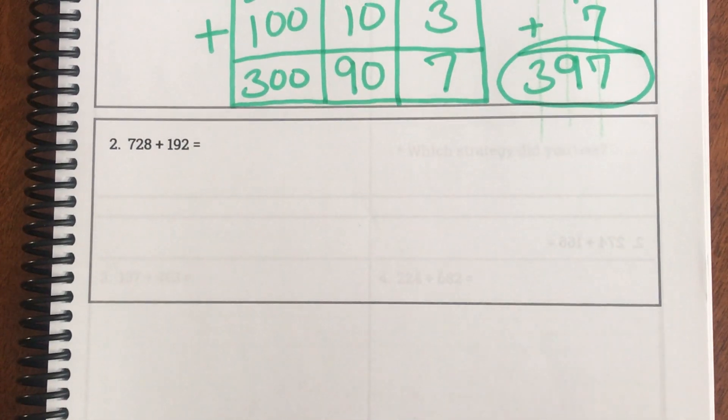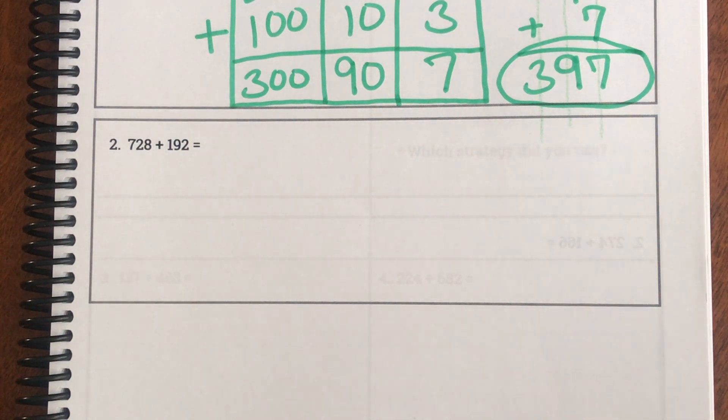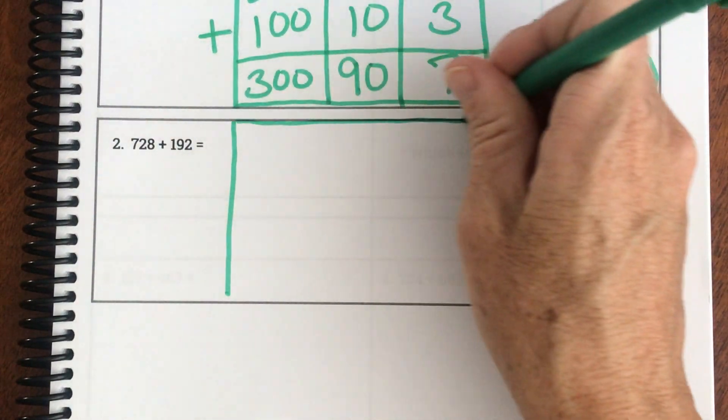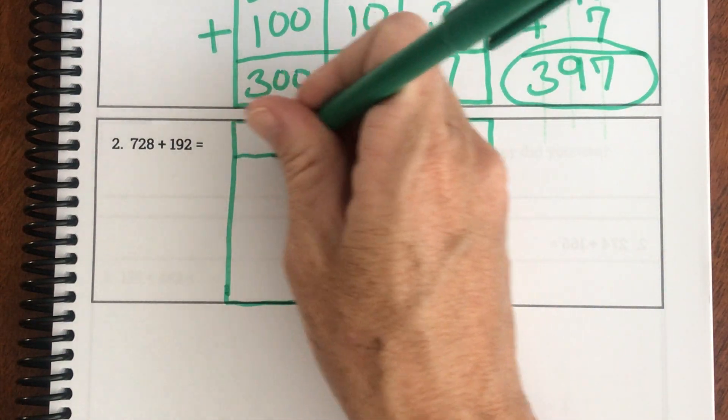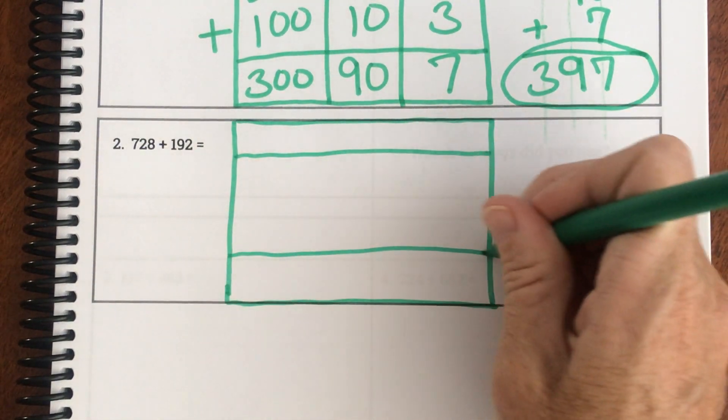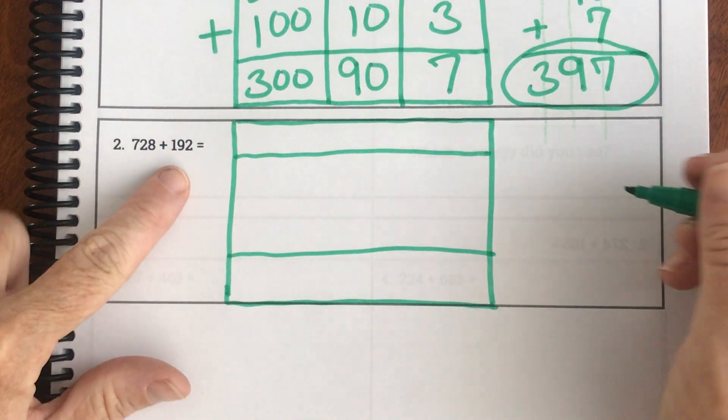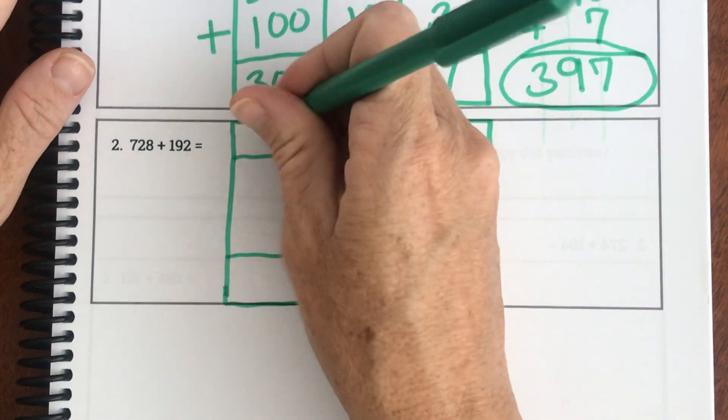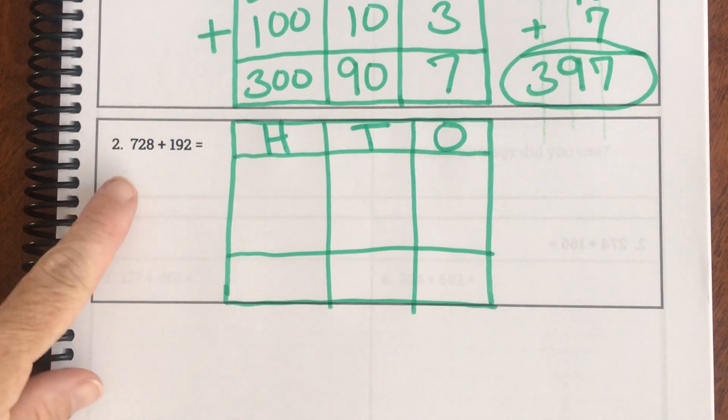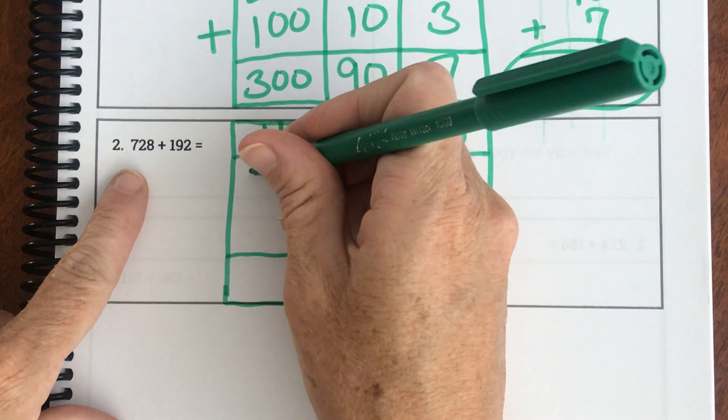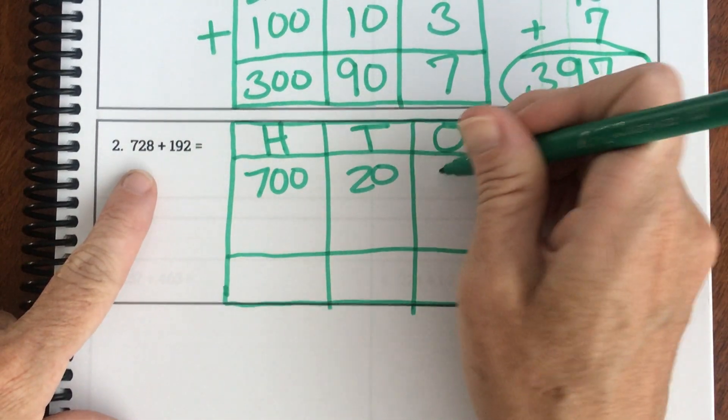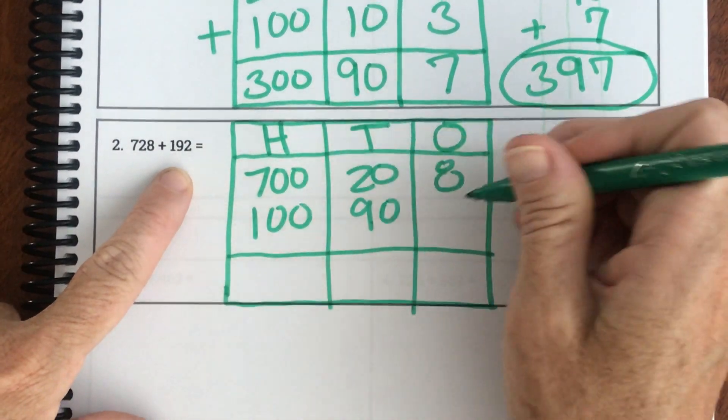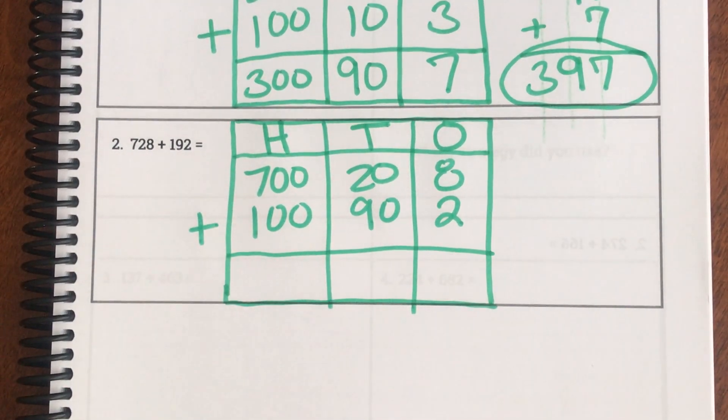Let's do one more together, ladies and gentlemen. So our first step is to draw this mat and decompose our addends. So let's draw our mat. And we need a top section for our place values and a bottom section for our answer. And then this is three digit plus three digits, so we're going to divide it into three columns. And we have our ones column, our tens, and our hundreds. So let's decompose this addend. We have 700 + 20 + 8. And then this addend is 100 + 90 + 2. So step 1 is done.